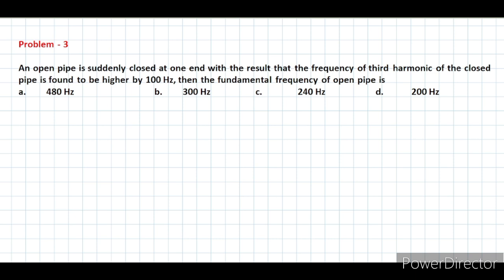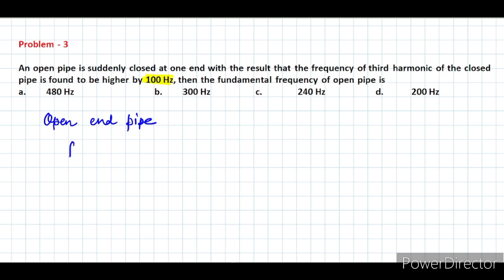Third question: an open pipe is suddenly closed at one end, and the frequency of the third harmonic of the closed pipe is found to be higher by 100 Hz than the fundamental frequency of the open pipe. Options: A — 480 Hz, B — 300 Hz, C — 240 Hz, D — 200 Hz. For an open-end pipe, the fundamental frequency f = v / 2L.